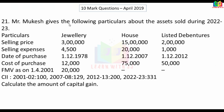Mr. Mukesh gives the following particulars about the assets sold during 2022-23. Assets: jewelry, house, and listed debentures. Details include selling price, selling expenses, date of purchase, cost of purchase, and fair market value. For jewelry: selling price Rs.3,000, selling expenses Rs.4,500, net sale consideration calculated.